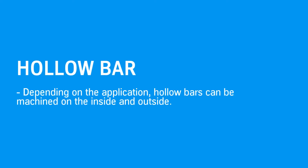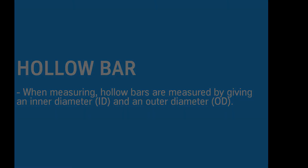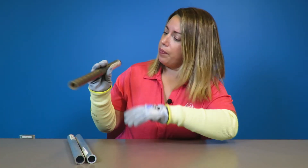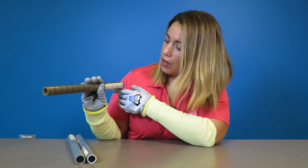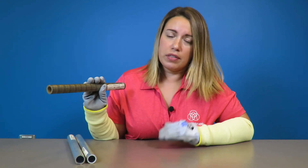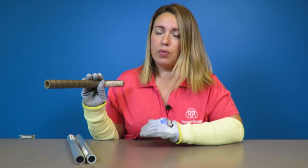A hollow bar, depending on the application, can be machined both on the inside and the outside. Hollow bars are measured by giving an inner diameter, an ID, and an outer diameter, or an OD. Like in this example here, this one is a 0.75 inner diameter with a one inch outer diameter. A hollow bar is always going to be measured by giving the OD, the outer diameter, by the ID, which is the inner diameter.